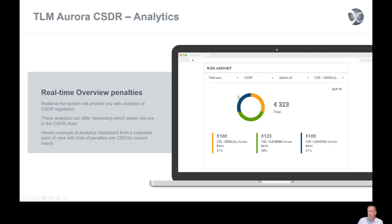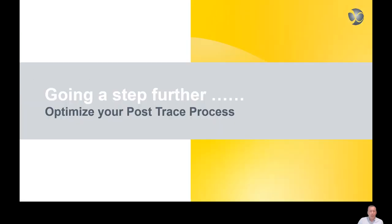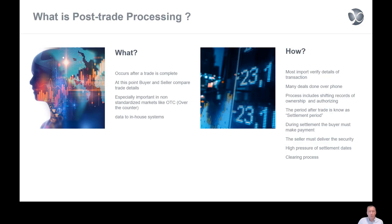So this is, in a nutshell, what our solutions are. We have a solution where you will have to provide the list of internal failed settlements yourself, or with the optional settlement module of Aurora, we will be able to detect earlier any eventual failures of settlements that will then avoid any penalties later. But if you go a step further, you could also optimize your post-trade process, because your post-trade process will actually determine what your cash penalties or mandatory buy-ins will be that you have to pay.